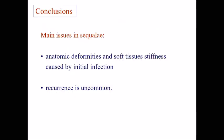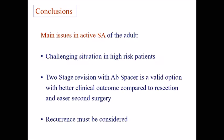In conclusion, the main issues in sequelae are the anatomical deformities and soft tissue stiffness caused by the initial infection. Recurrence is uncommon, though it must be ruled out. In active septic arthritis of the adult, it is a challenging situation in high-risk patients. Two-stage revision with antibiotic spacers is a valid option with better clinical outcomes compared to resection arthroplasty and facilitates easier second surgery. Recurrence must be considered, and more than one surgery may be necessary for these patients.